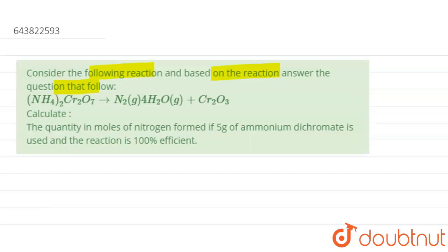So we have to calculate the moles of nitrogen formed if 5 grams of ammonium dichromate is used and the reaction is 100 percent efficient. That means the reaction is ideal; all the reactant is decomposed and it is accompanied in the product formation.